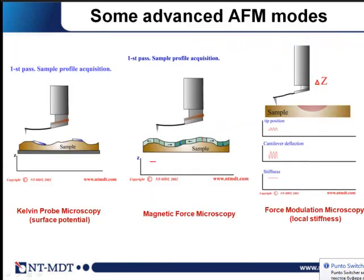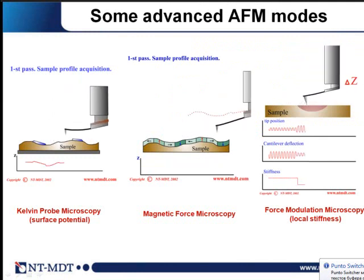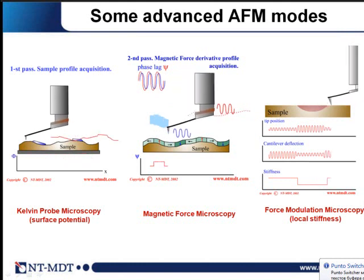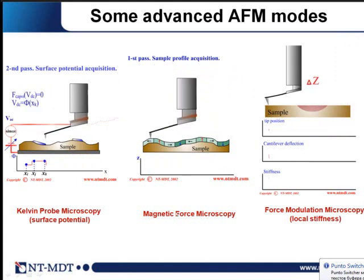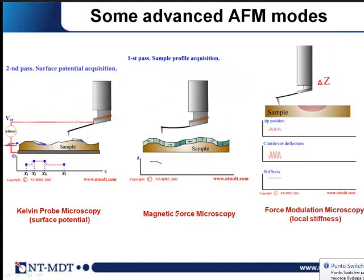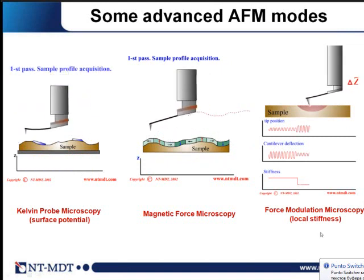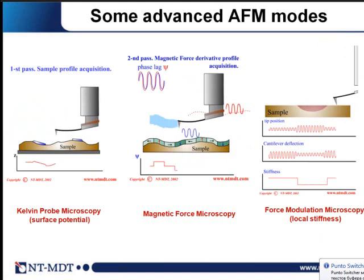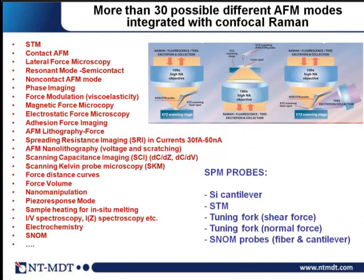Atomic force microscopy is a universal technique for surface analysis, able to provide physical information about sample surface properties. This includes Kelvin probe microscopy — which studies surface potential or local work function — magnetic force microscopy measuring sample magnetization with high lateral resolution, and force modulation microscopy which measures local elastic properties. All these techniques have dozen-nanometer scale resolution. There are many different modes of atomic force microscopy listed here.